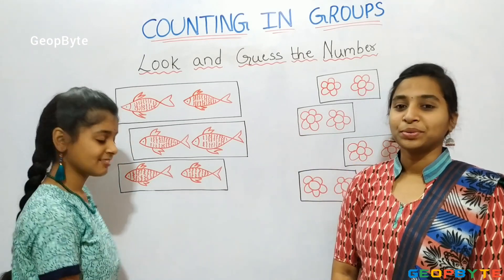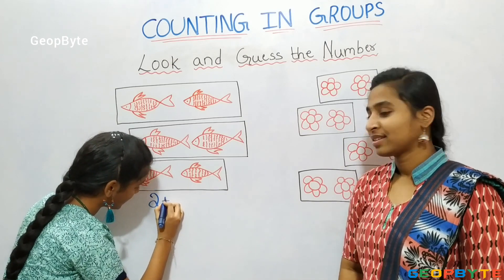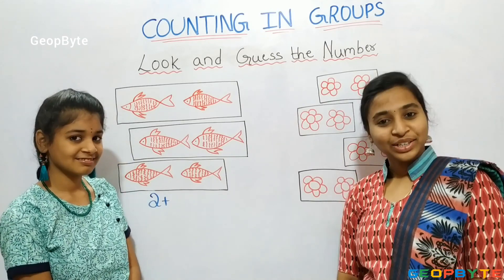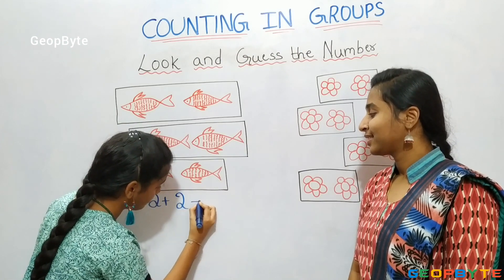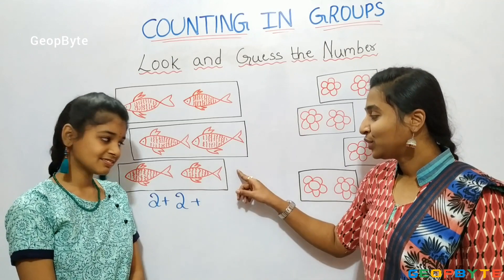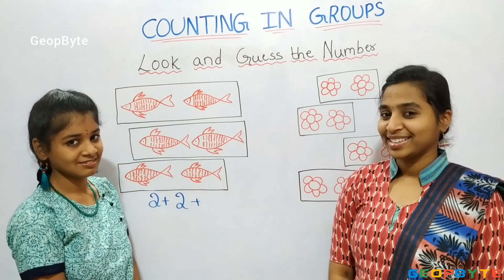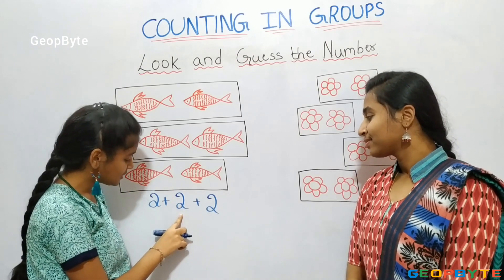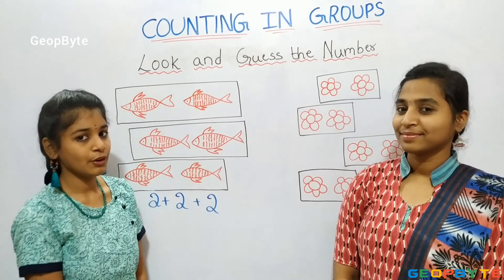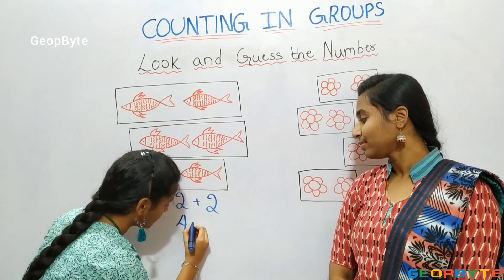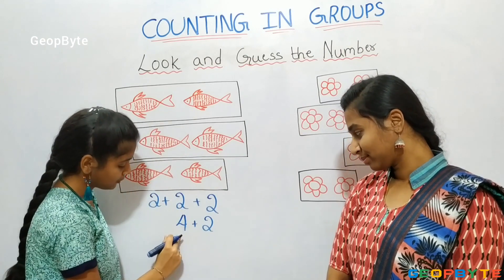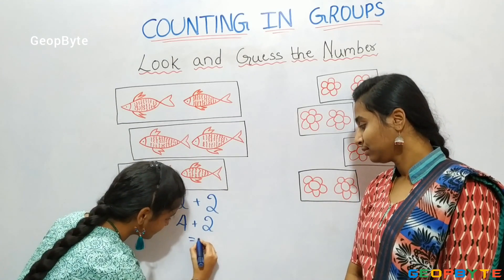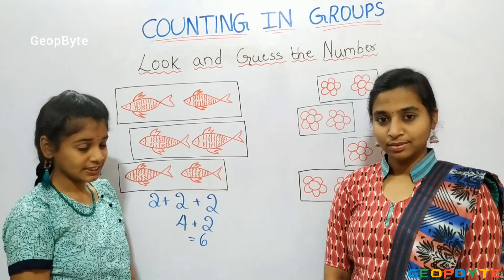Let us write 2. Now we have 2 fishes in this row, let us write 2. Again, we have 2 fishes in this row, let us write 2. 2 plus 2 is equal to 4. 4 plus 2 is equal to 6. There are 6 fishes.